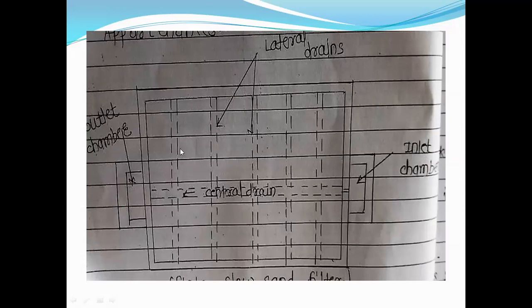The slow sand filter has two chambers: an outlet chamber and an inlet chamber. Water enters into the slow sand filter from the inlet chamber. The drains are used for moving and filtering water through the slow sand filter.